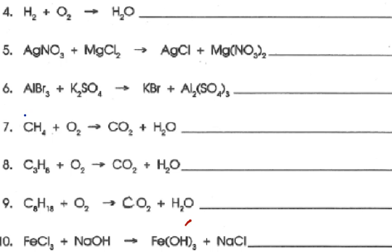Number 4 is our first example from class to open up balancing equations. When you're balancing equations, you're looking to see what's on the reactant side and what's on the product side, and you want to make the atoms equal using coefficients. We look at hydrogen first — there are two hydrogens on the reactant side and two hydrogens on the product side, so hydrogens are balanced.